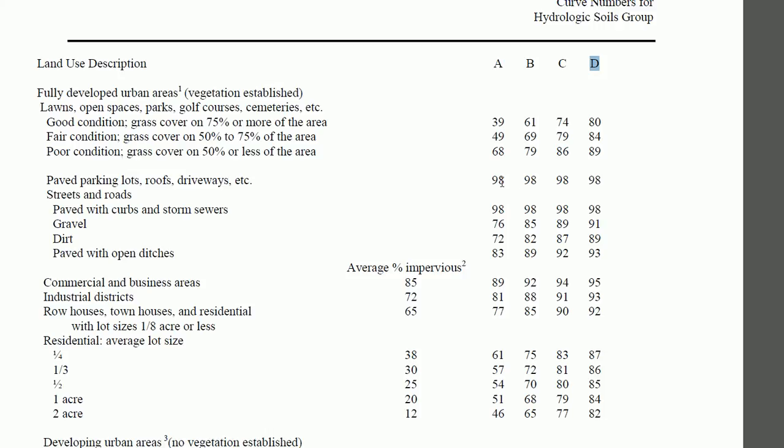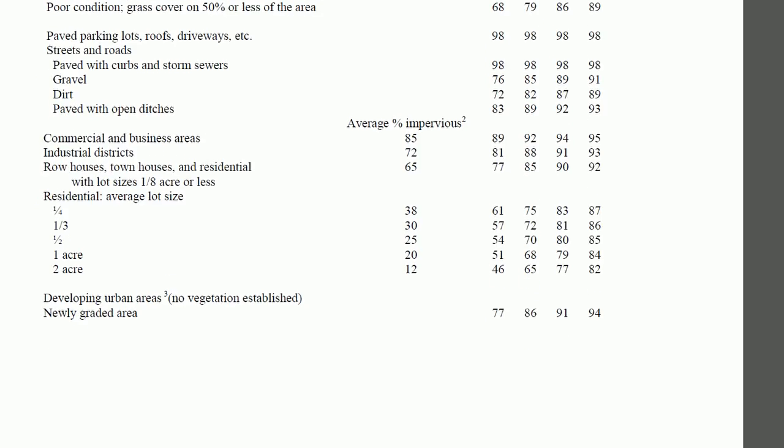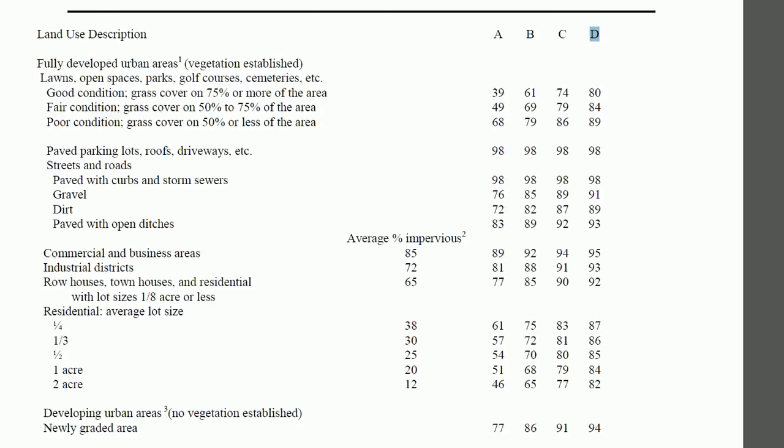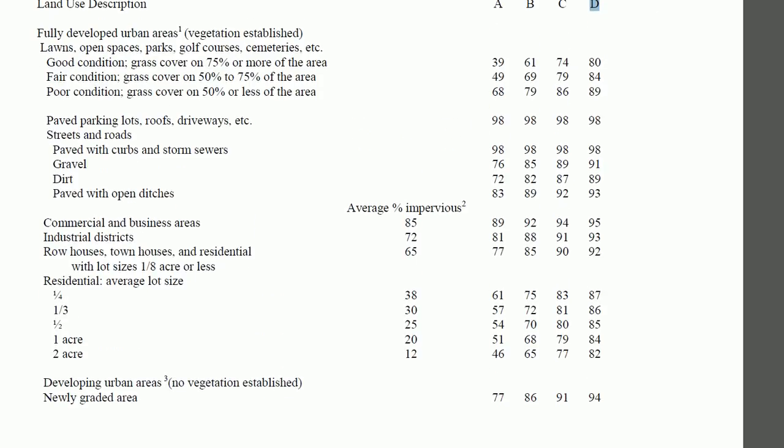And all of these numbers are curve runoff numbers. Notice that the highest one you see here is a 98, and the lowest one you see is about a 39. So most curve numbers are generally from 30 to 98, 99, 100. So you'll have a list of all these different land uses, the land conditions there, and then you'll have soil groups up here, and you'll have curve numbers.